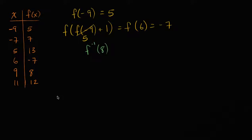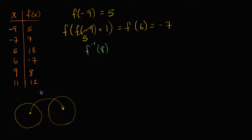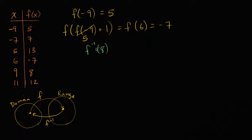I encourage you to pause the video and try to think about it. So, f of x — just as a reminder of what functions do — f of x is going to map from this domain, from a value in its domain, to a corresponding value in the range. So this is what f does: this is domain, and this right over here is going to be the range. Now, f inverse, if you pass it the value in the range, it'll map it back to the corresponding value in the domain.